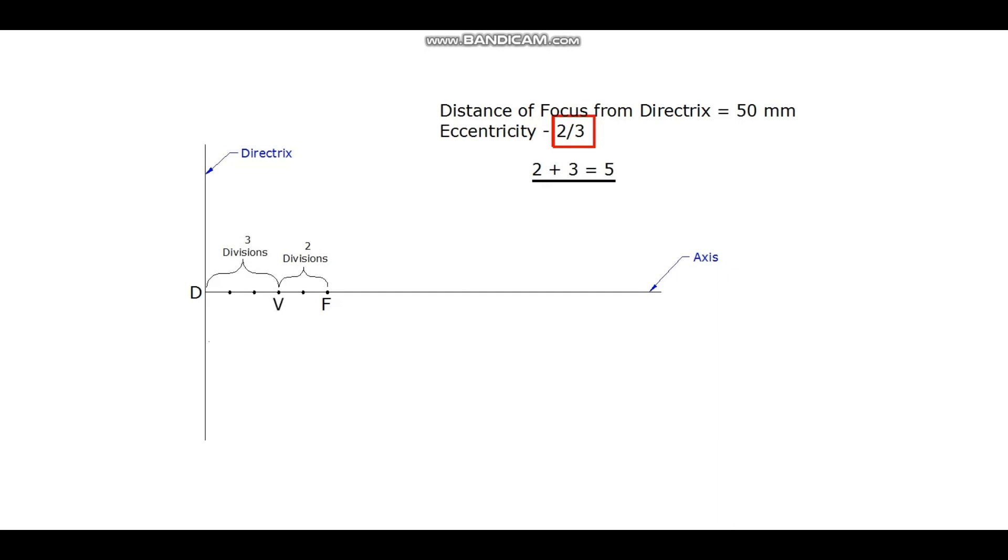Now, a vertical line is drawn from V. Distance VF is transferred to this vertical line. A line is drawn from D to connect this point and is extended for a convenient distance.